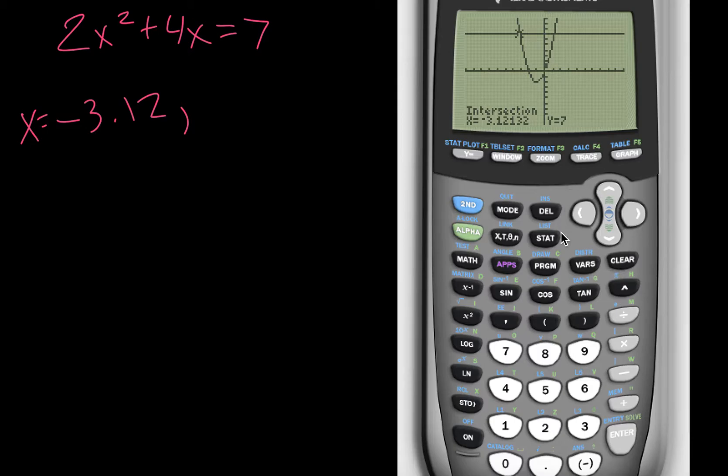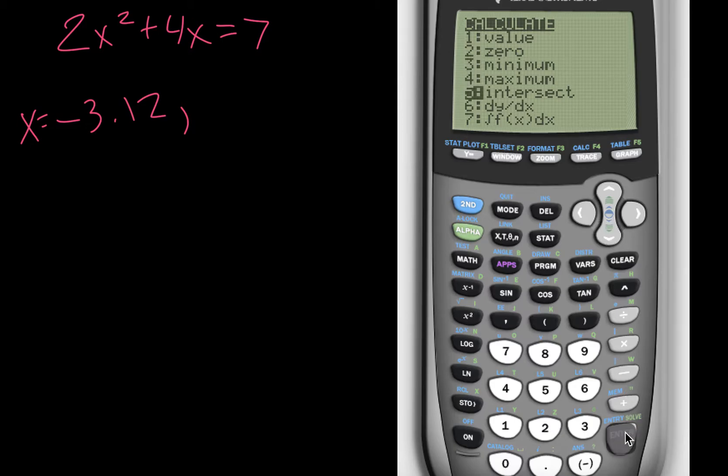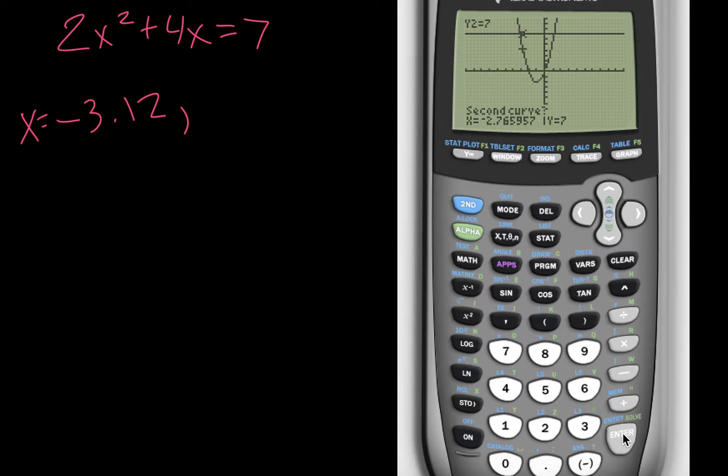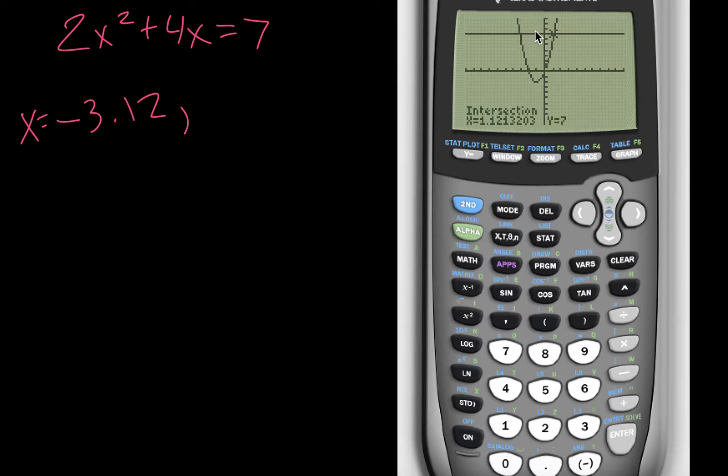And now we go through the same process, so we go 2nd calc, go down to intersection. It just asks for the first curve, so click anywhere on the parabola, anywhere on the line. This time though, I'm going to guess closer to the other intersection, hit enter, and it tells me it's 1.12. And those are the two values that we could plug in for x to make this true. If we did the quadratic formula and then turned our answer into a decimal, it would give us the same answer.